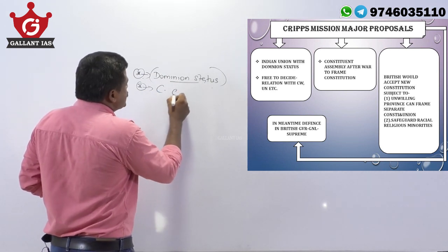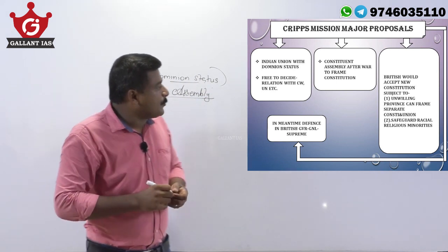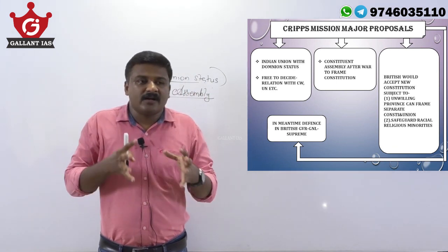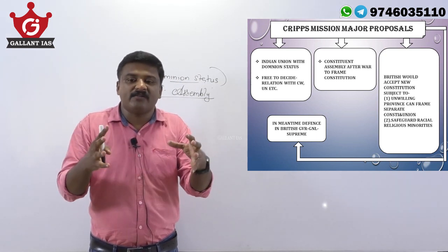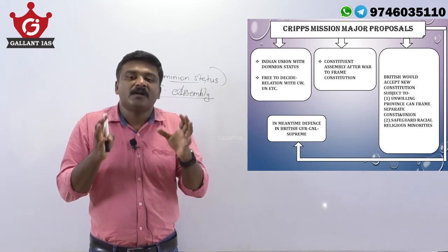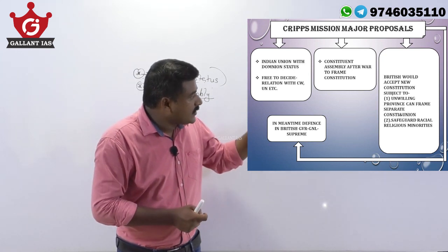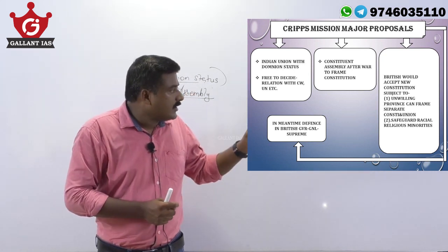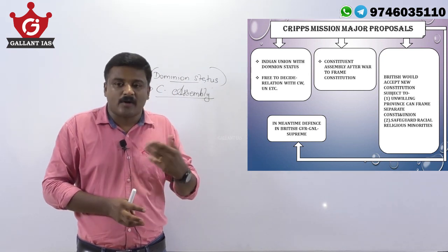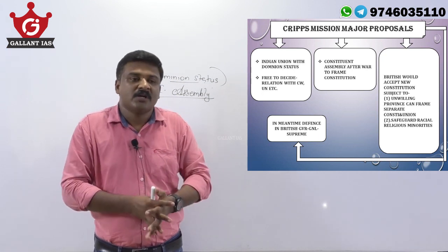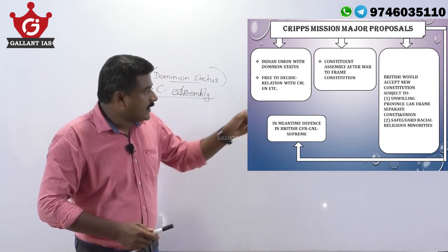Another proposal was the setting up of a Constituent Assembly to frame the future constitution of India. Members of the assembly would be partly elected from provinces and partly nominated from princely states — so partly elected, partly nominated members would sit in the Constituent Assembly to frame the future constitution of India.